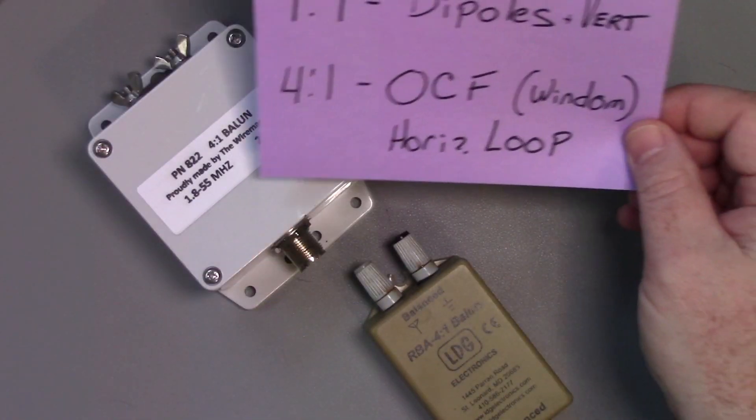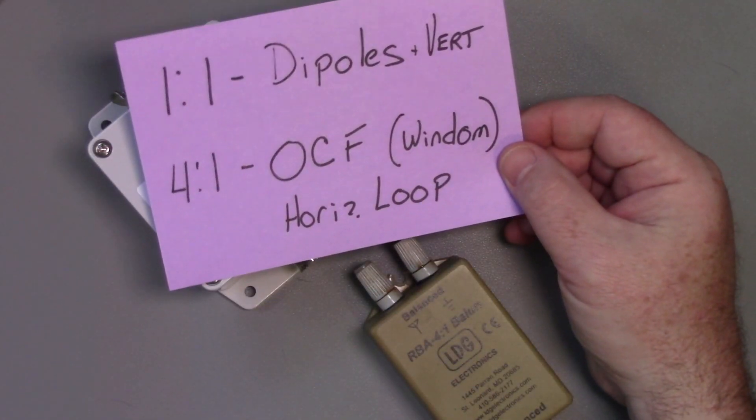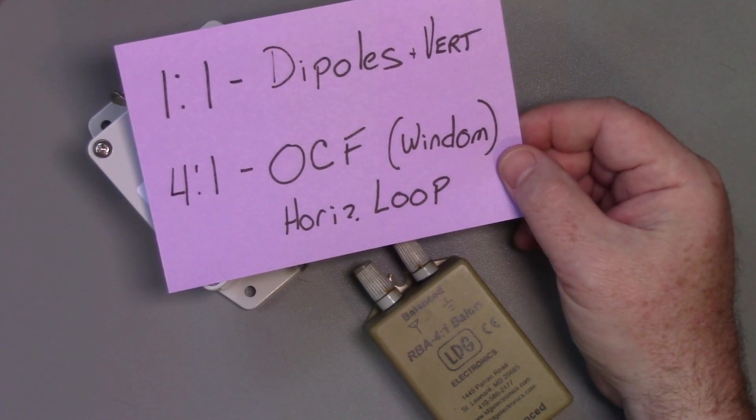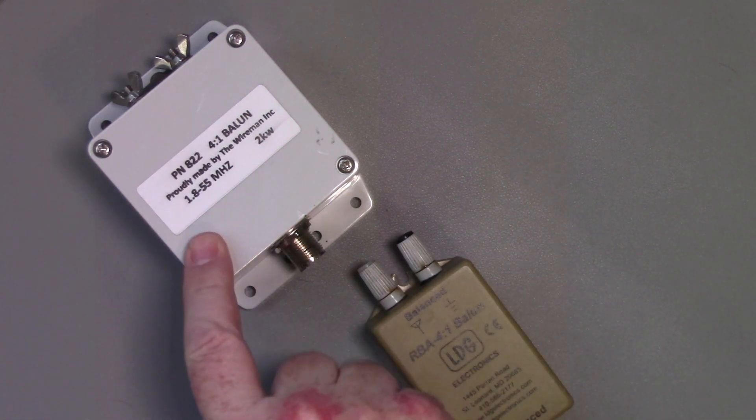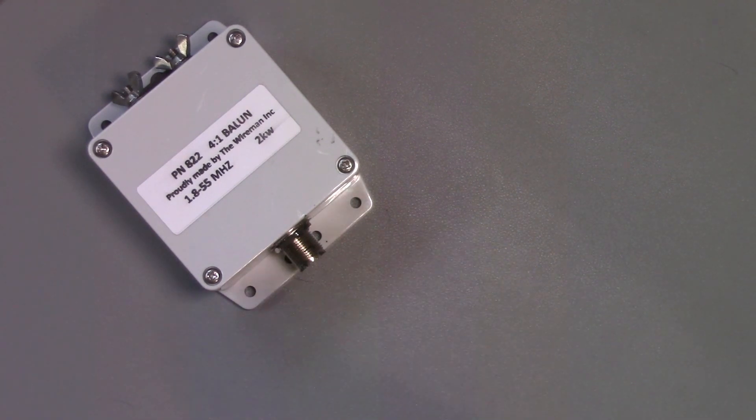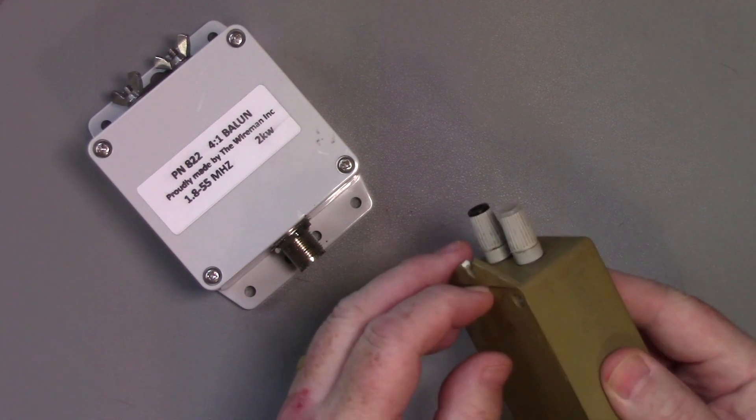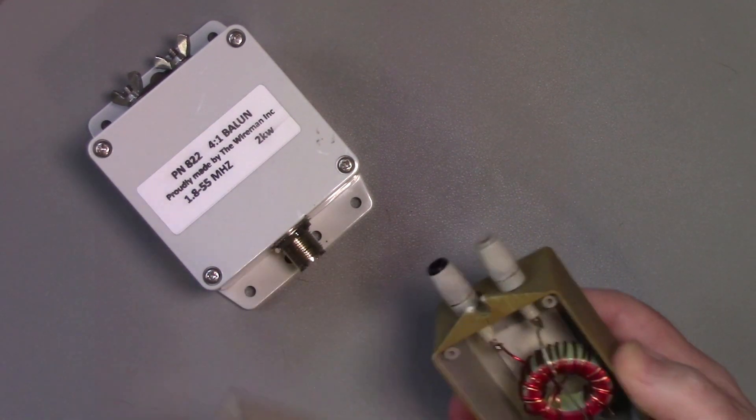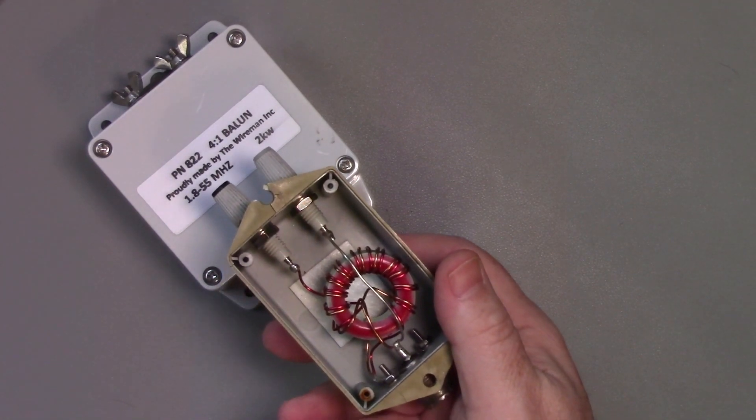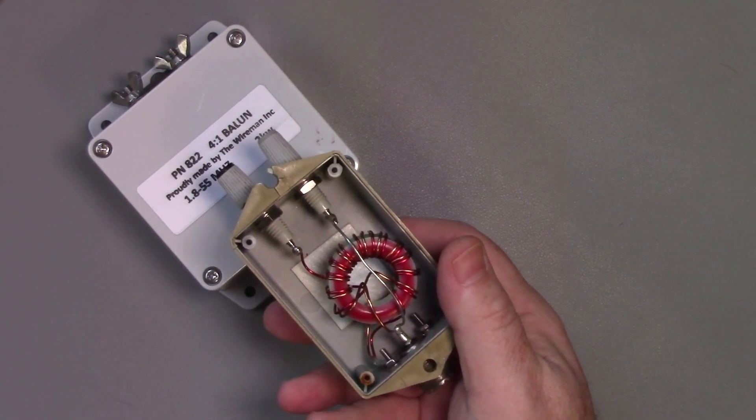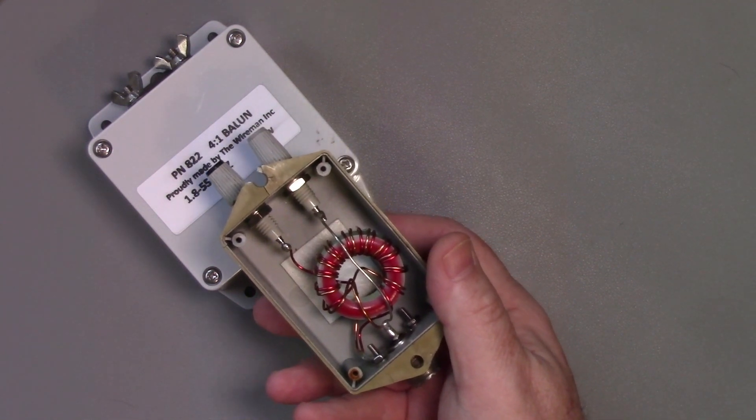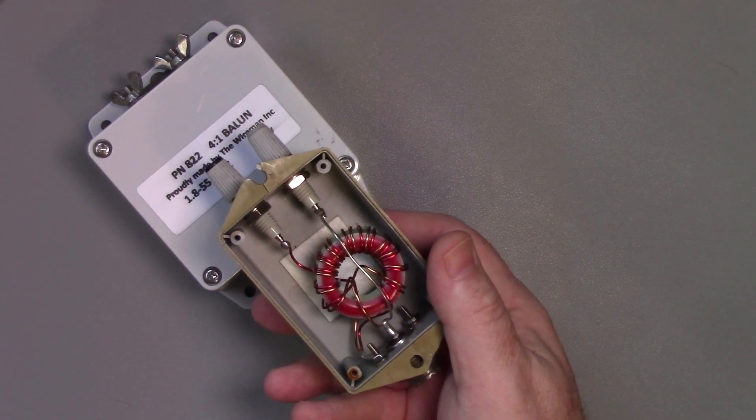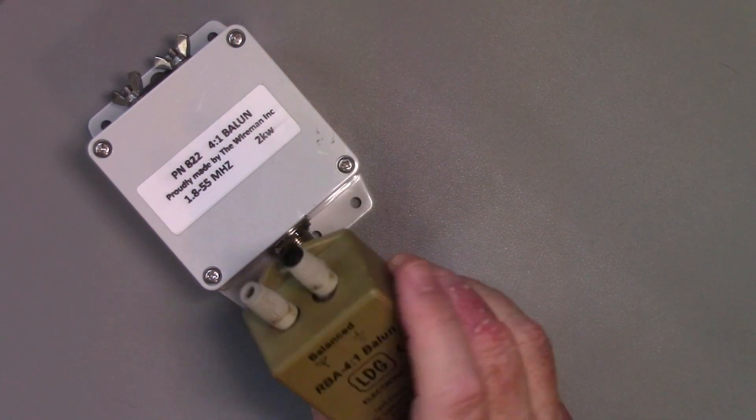Other baluns I have here are four-to-one baluns, and they're really designed for off-center fed dipoles or horizontal loops, a lot of times when you see four-to-one baluns. Just taking a peek inside here, one of these is by the Wireman, the other one's by LDG. No endorsement, just the ones I had around the house. But I opened up the LDG one here, and we've got a matching network inside that, with a toroid and some winding, will match your coax and make sure that you are getting a feed line reduction of current as you go forward. Lots of times, ladder line will be connected to these as well.